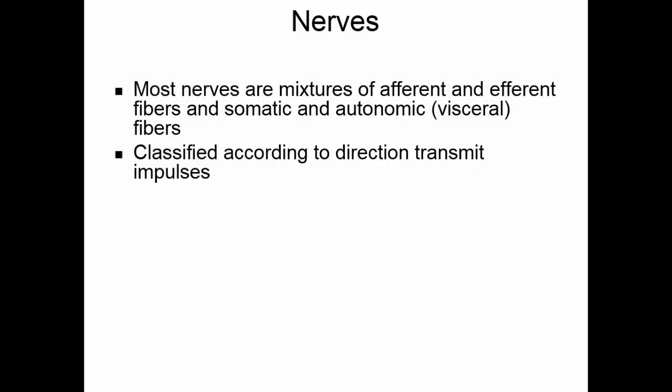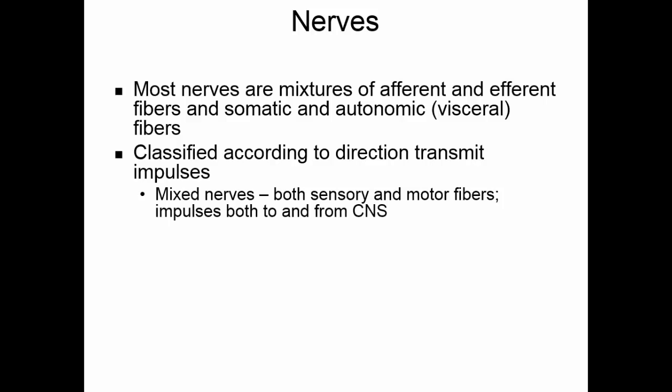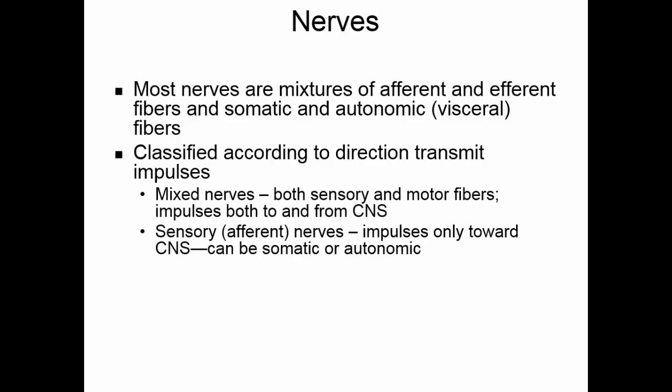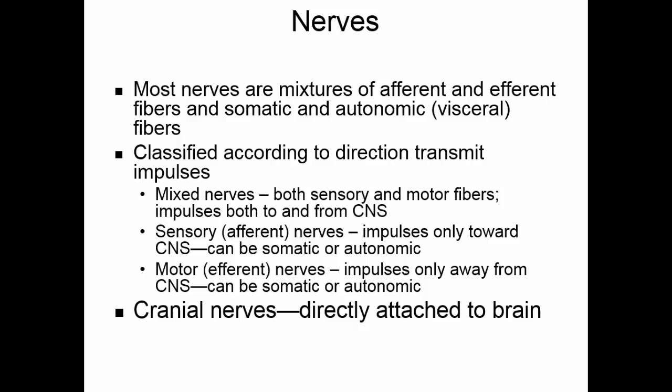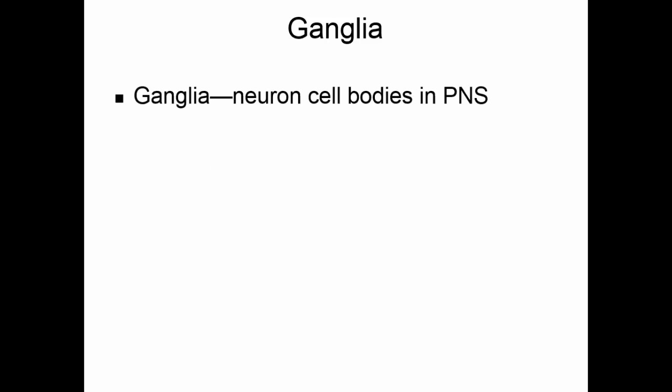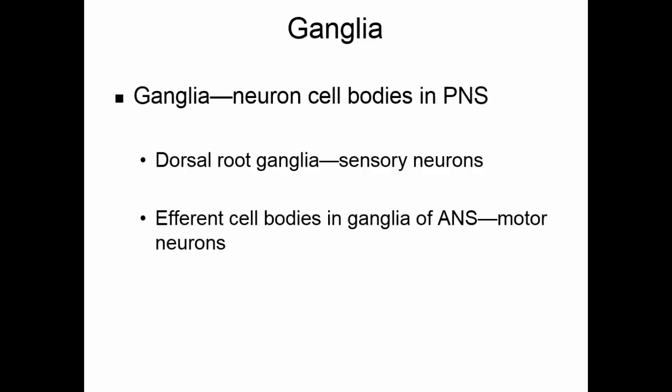Nerves can be classified according to the direction they transmit impulses. Mixed nerves have both sensory and motor fibers — impulses travel both to and from the central nervous system. Sensory or afferent nerves have impulses that go only toward the central nervous system, and can be either somatic or autonomic. Motor or efferent nerves have impulses traveling only away from the central nervous system, and can also be somatic or autonomic. Cranial nerves come directly off the brain, and spinal nerves are directly attached to the spinal cord. Ganglia are neuron cell bodies found in the peripheral nervous system — these were called nuclei in the central nervous system. The dorsal root ganglia are the cell bodies of sensory neurons. Only in the autonomic nervous system do we have motor ganglia.